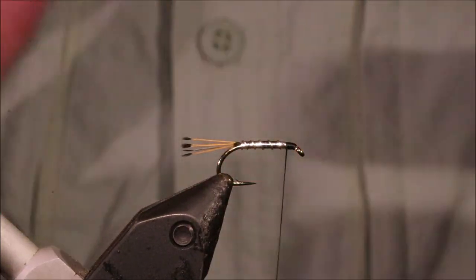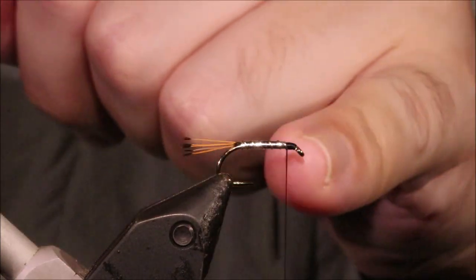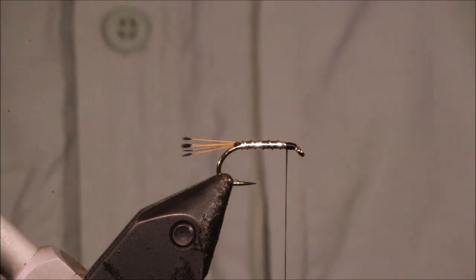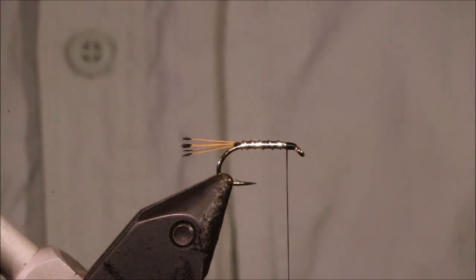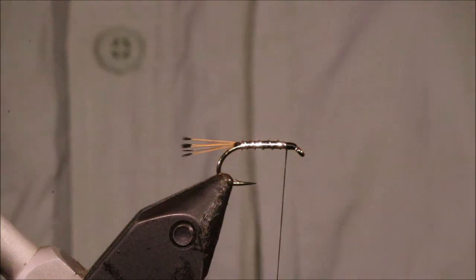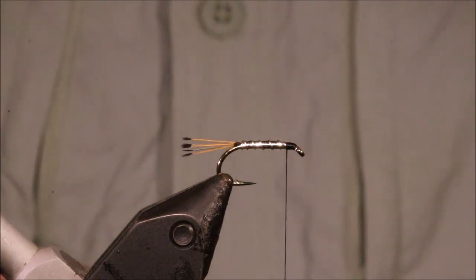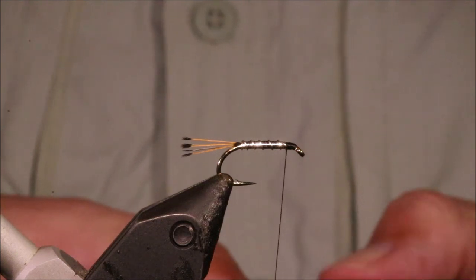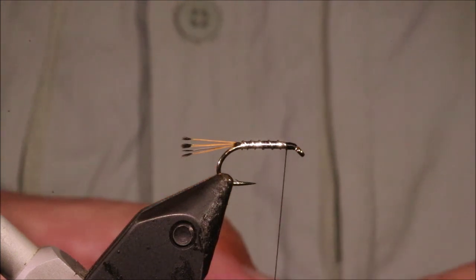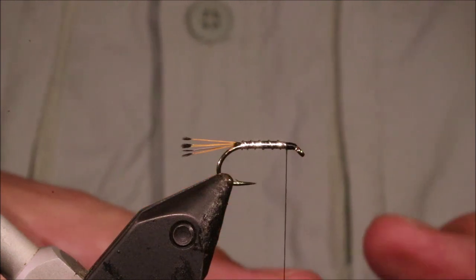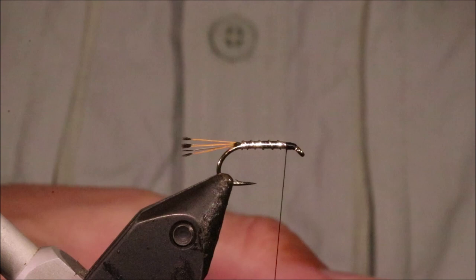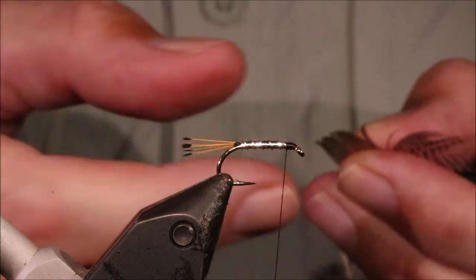So you've got a choice here. Traditionally the hackle would be tied first and then the wing but I don't do that. I think the fly has much more life if you tie the wing first and that hackle can be moving in front of it. But it's your choice if you prefer the look of the old style with the hackle tied first and then tie it like that. It's your fly after all.